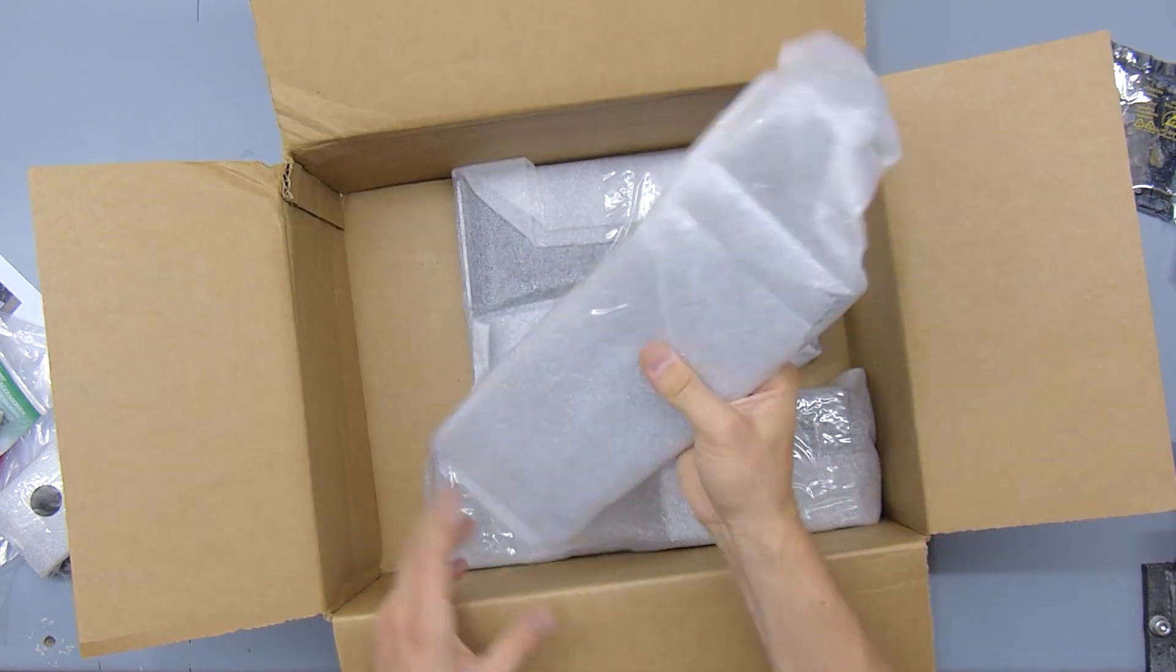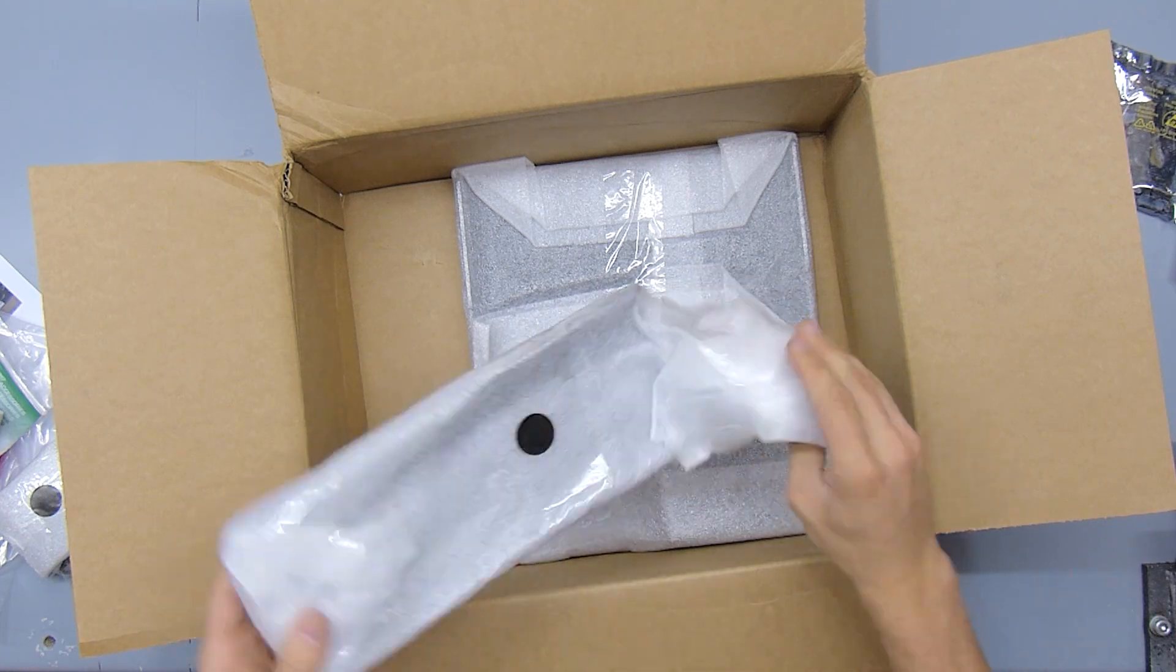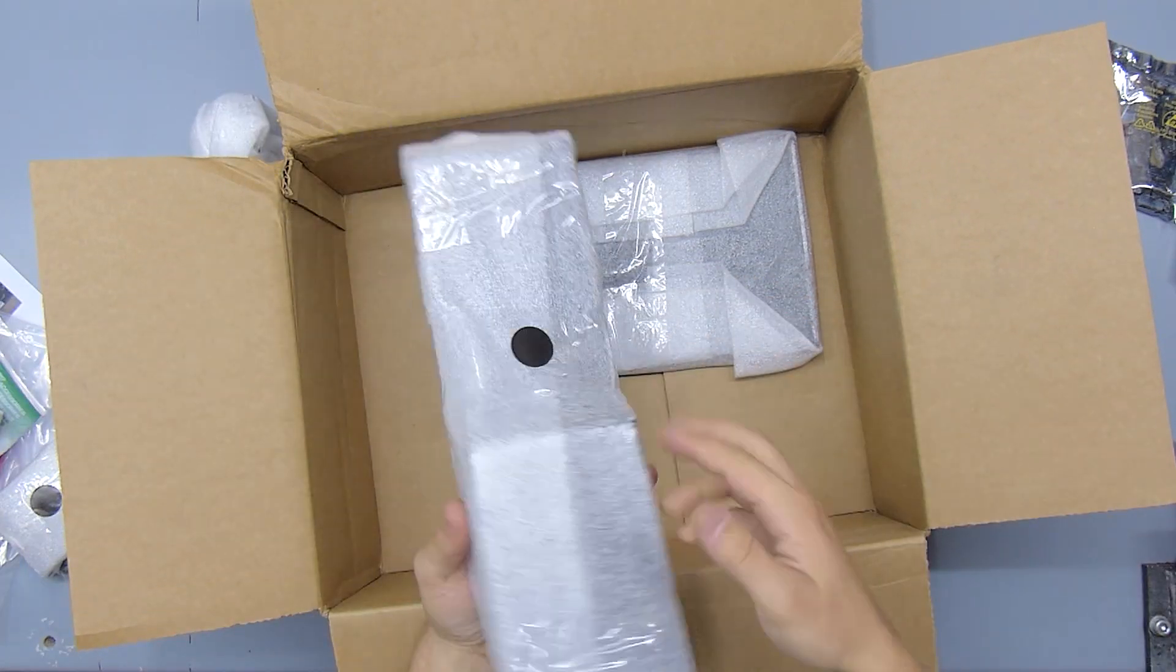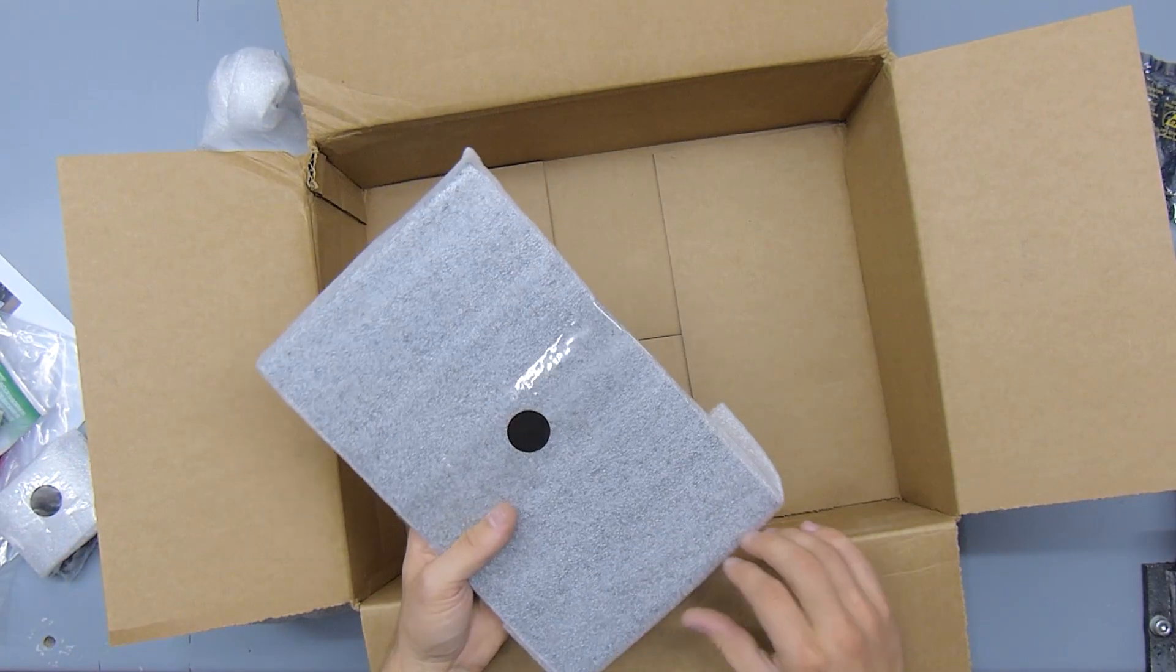And we've got the frame parts. So this is the Y-arm with the mount for the hotend and the probe, this is the printer's base, and the print bed, so the x-axis practically.